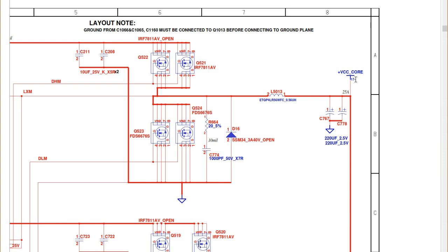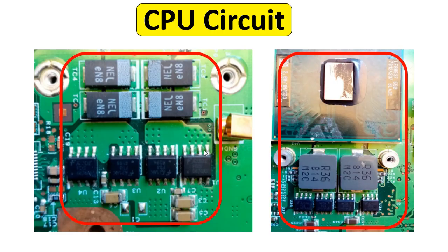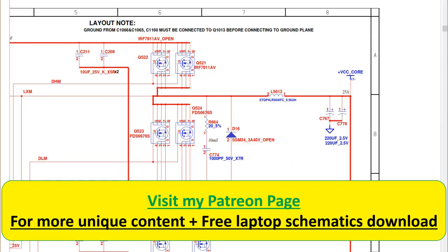To summarize: the CPU needs plus VCC core to work properly. To generate it, we need the CPU controller IC, two channels each with two MOSFETs here and two on the back (four total), an inductor, and two tantalum capacitors to filter the voltage. This is the CPU circuit, and we will continue in the next videos.